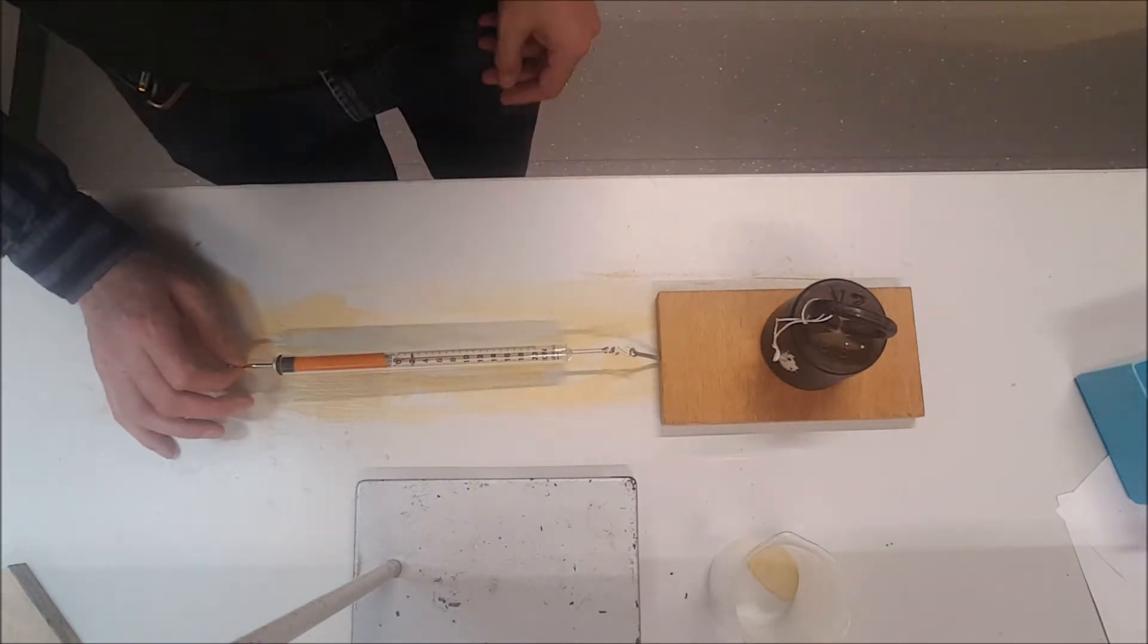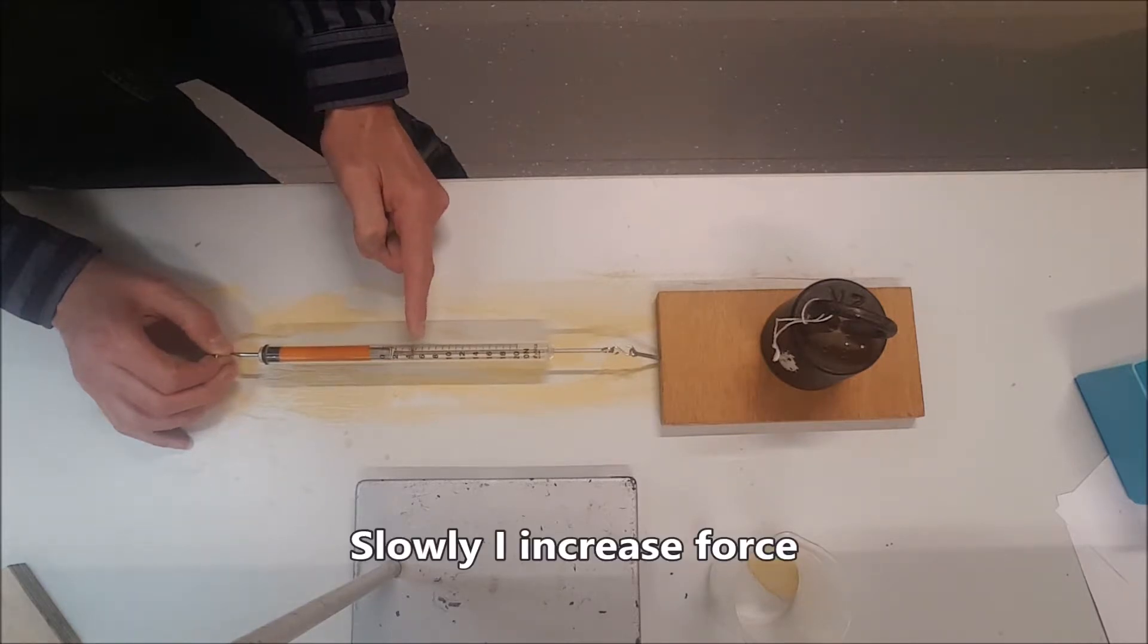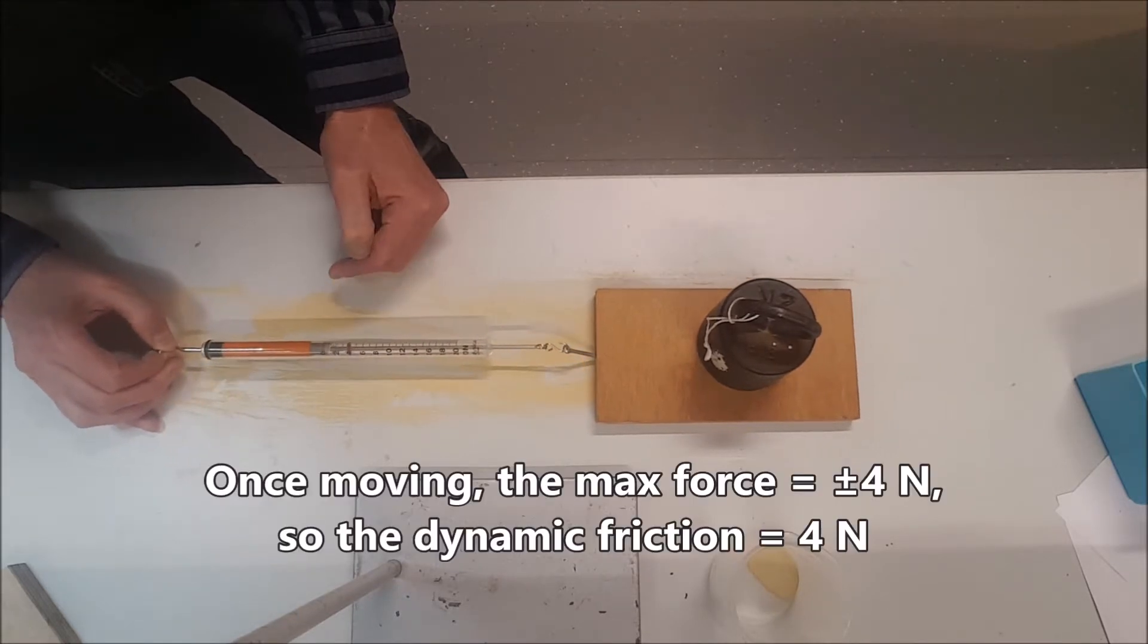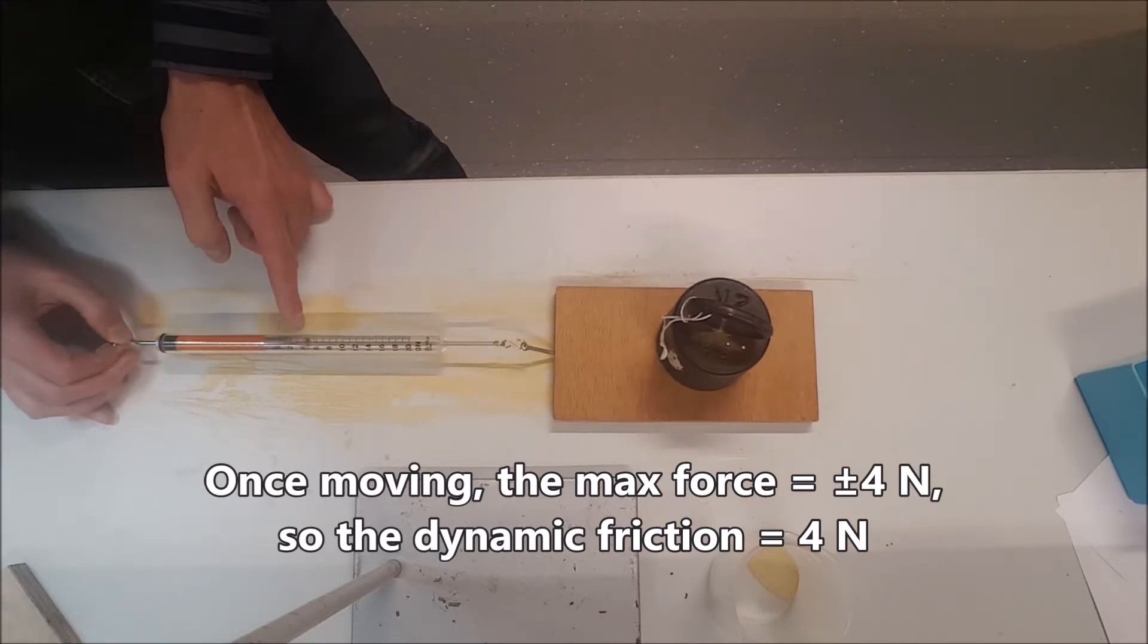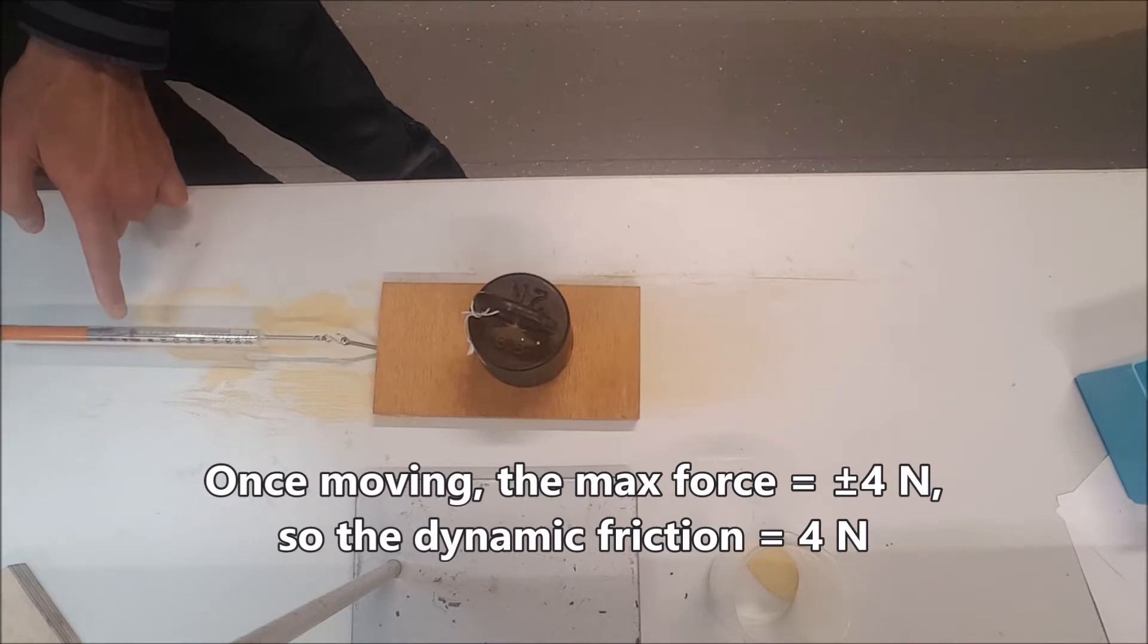So right now the friction is static. You can see I try to build up slowly, 5 newtons, 5 newtons, and then it starts moving. And then once it starts moving, the friction is not going up to 5 newtons anymore, staying below 4.